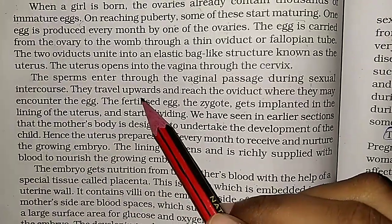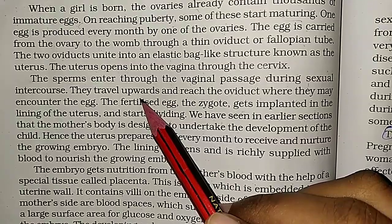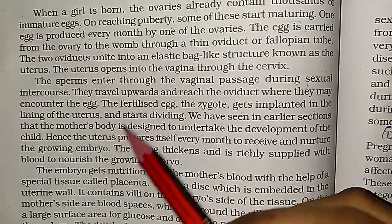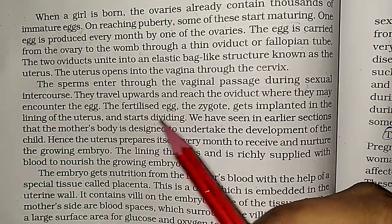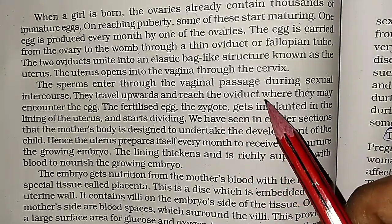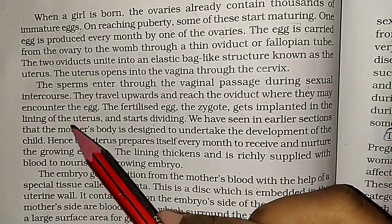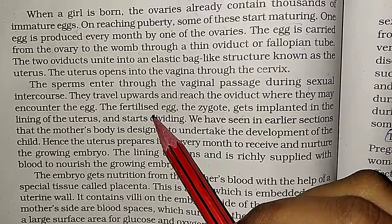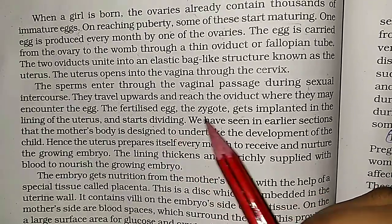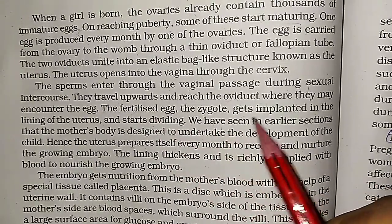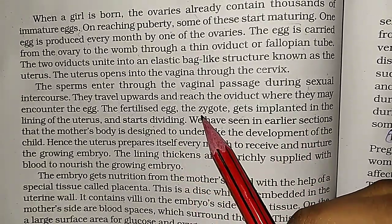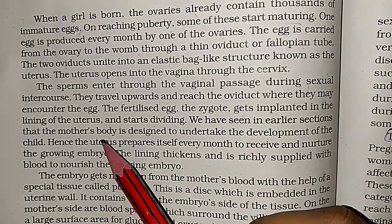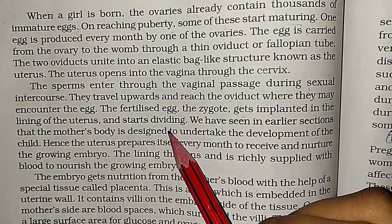The sperm enter through the penis into the vaginal passage during sexual intercourse. They travel upwards and reach the oviduct, where they may encounter the egg. If fertilization occurs, the zygote gets implanted in the lining of the uterus and starts dividing.